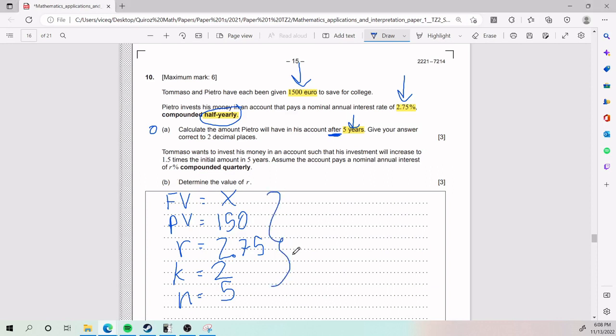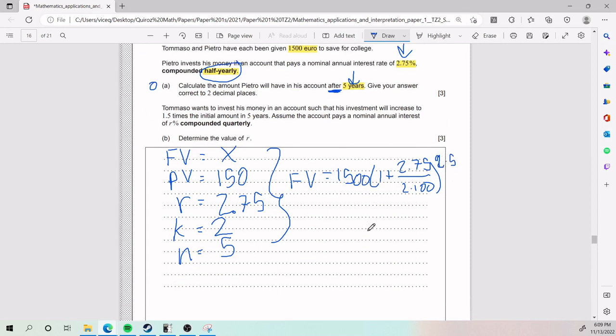That is the setup for part A. If I plug everything into the formula, we're going to have that FV equals 1,500 times (1 plus 2.75 divided by 2 times 100) exponent 2 times 5. I plug everything into my calculator. FV is going to be just about 1719.49. I'm not done yet for part A. What am I missing? I am missing my units. So it's 1719.49 euros. Units is part of the mark scheme. A good way to remember is that if it's worth three points, one point is probably the units.